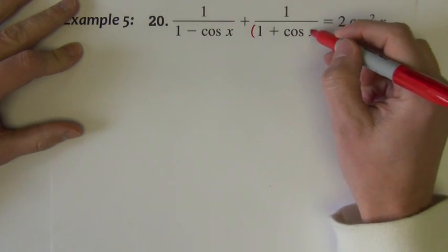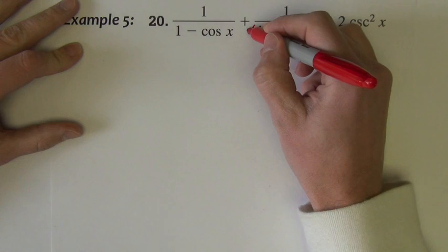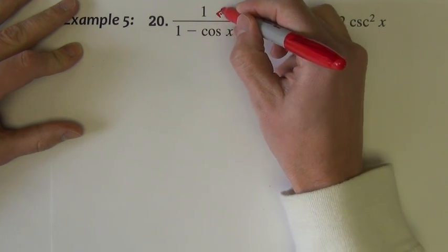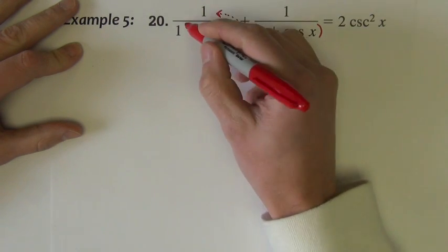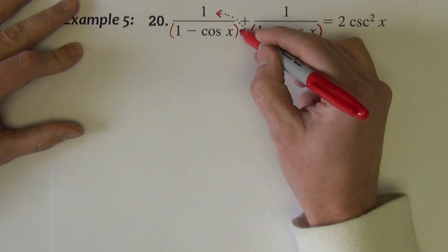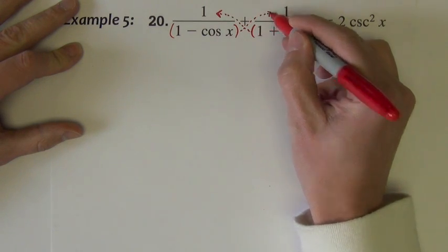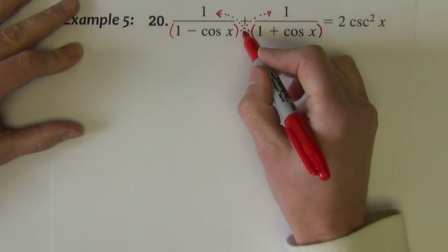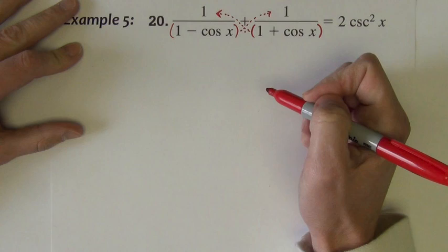This will require us to make a common denominator. I begin by taking this denominator and multiplying it across to the opposite fraction's numerator. I take this one and multiply it across to the opposite numerator.